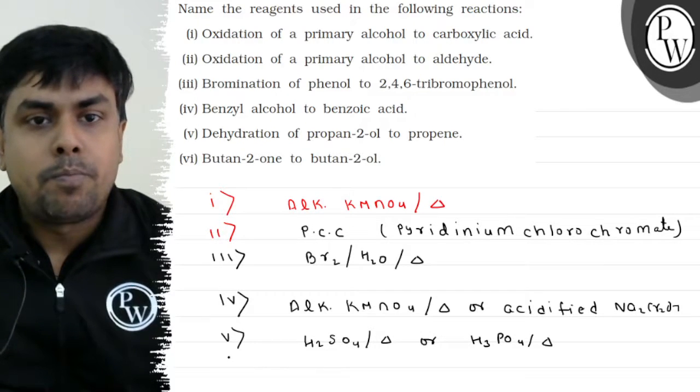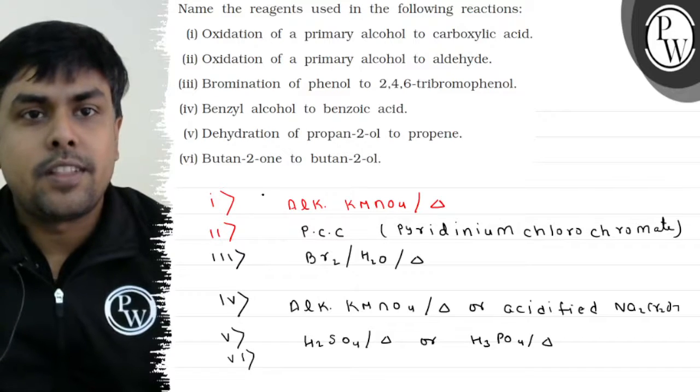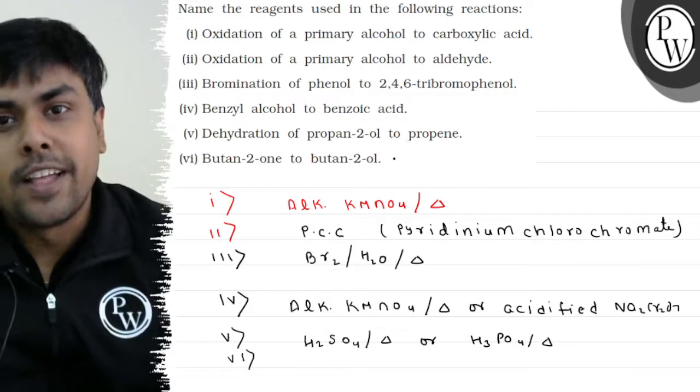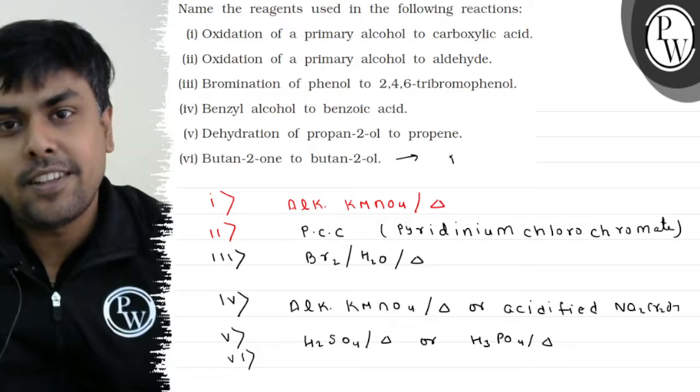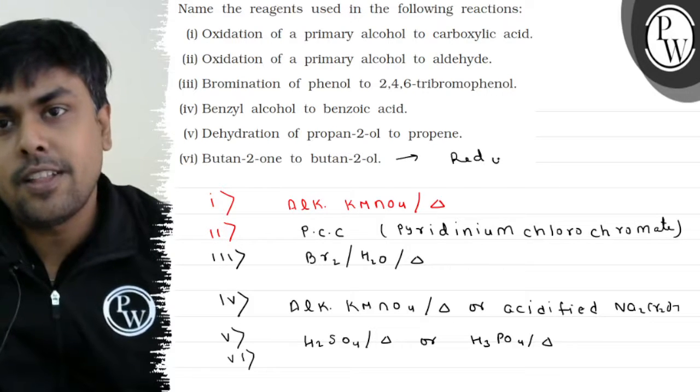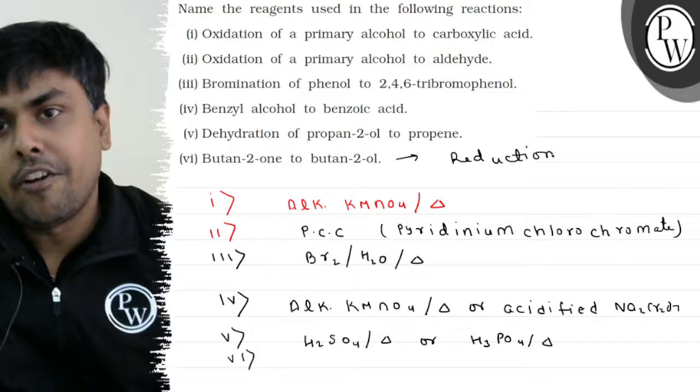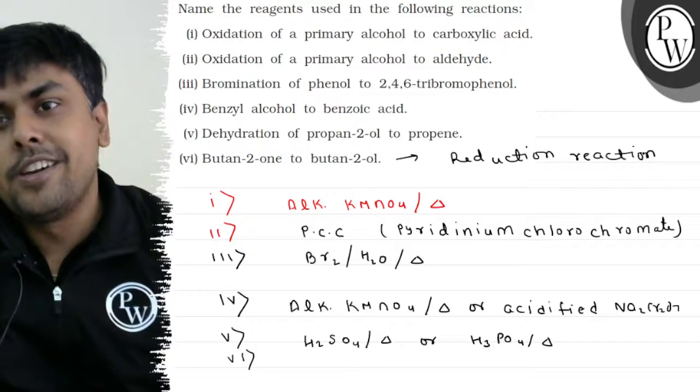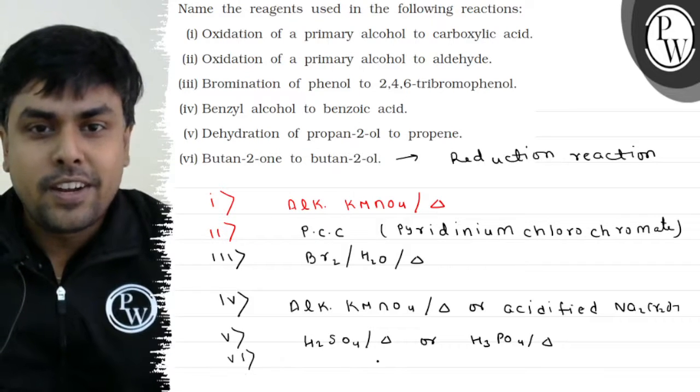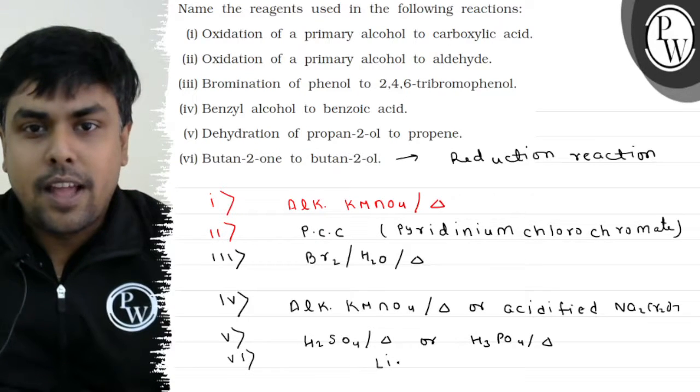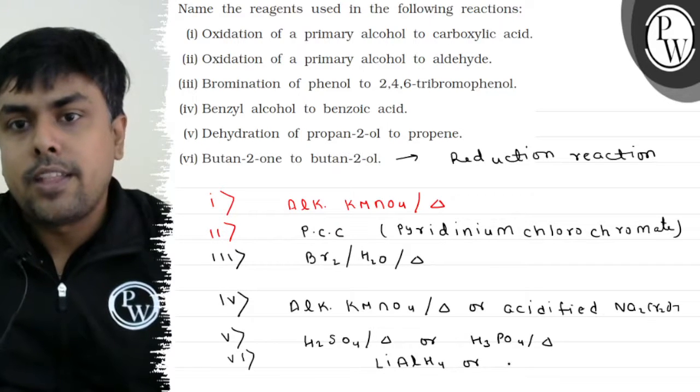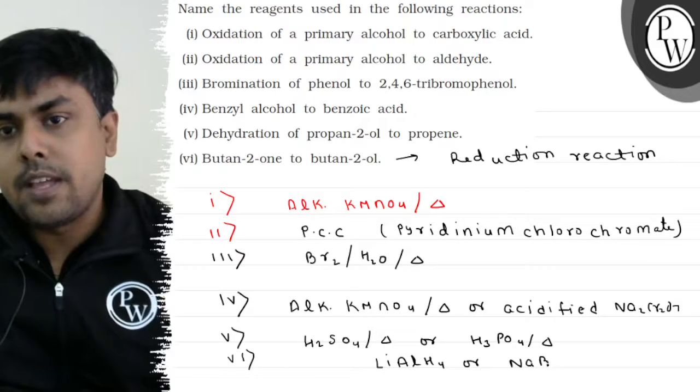Let's come to part 6 of the question: Butan-2-one to butan-2-ol. Can I say it's a reduction reaction? Right. और इसके लिए मुझे क्या यूज करना पड़ेगा? Reducing agent. Reducing agent क्या हो सकता है? LiAlH4, or I can use NaBH4.